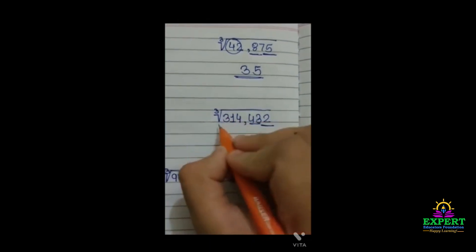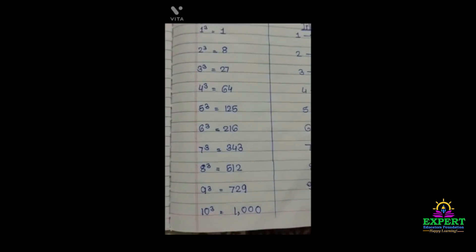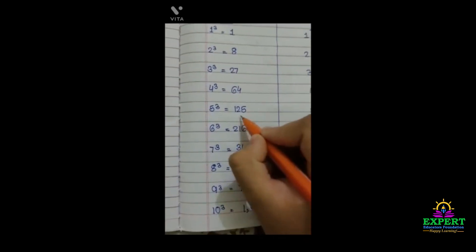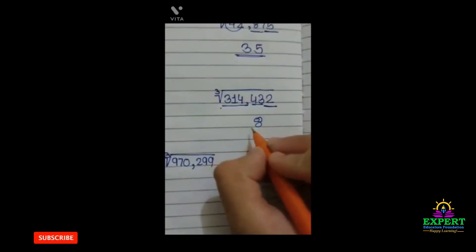Forget about these numbers and take 314. Now here 314 is not there, but 216 is there, the smallest number. The cube root of 216 is 6. So we will write here 6.